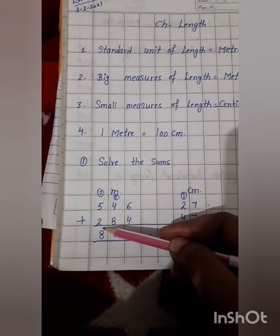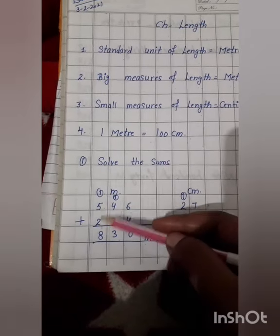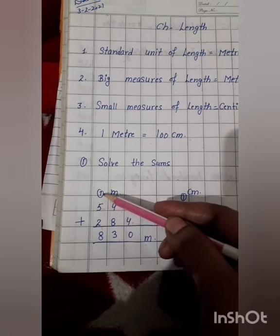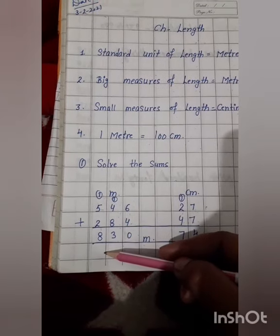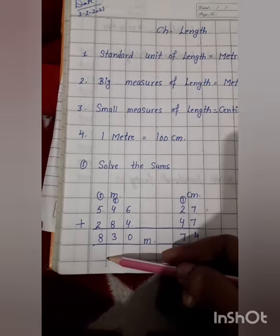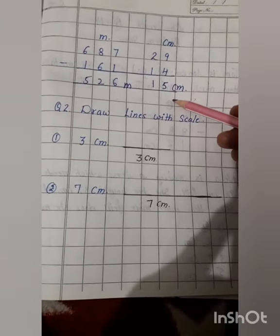5 added to 2 and 1 carry. 5 to 7 plus 1, 8. So, we will write 8 here. Okay, now we are going to do subtraction.